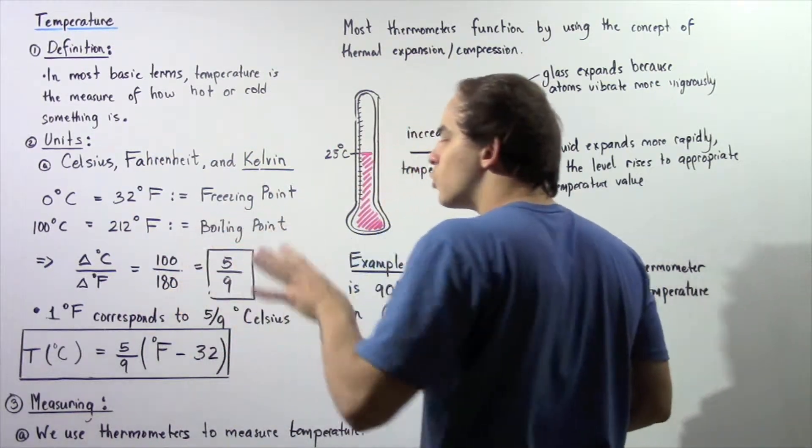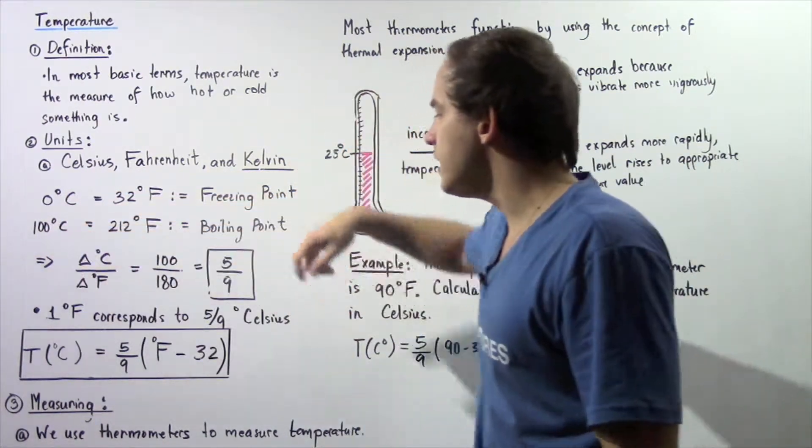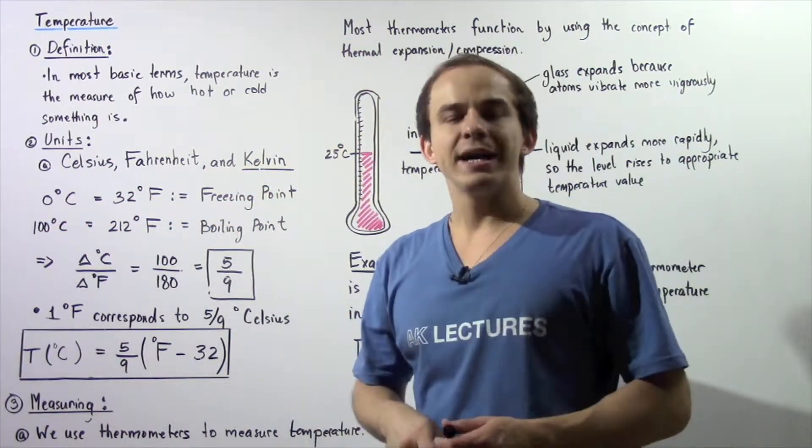The change in Celsius going from 0 to 100 is simply 100, and going from 32 to 212 gives you a change of 180. So we see the ratio of the change in Celsius and the change in Fahrenheit to be five divided by nine.